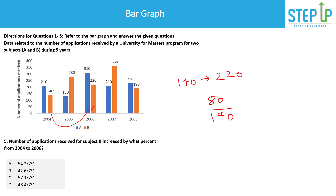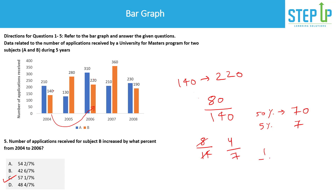There are multiple ways to calculate this. You can do 8/14 × 100 directly. Alternatively, 50% of 140 is 70 and 5% of 140 is 7, so 55% is 77 — still short of 80. We can simplify 80/140 as 4/7. Since 1/7 = 14.28%, we get 4/7 = 14.28 × 4 ≈ 57.14%. The answer is approximately 57%, with only one matching option.